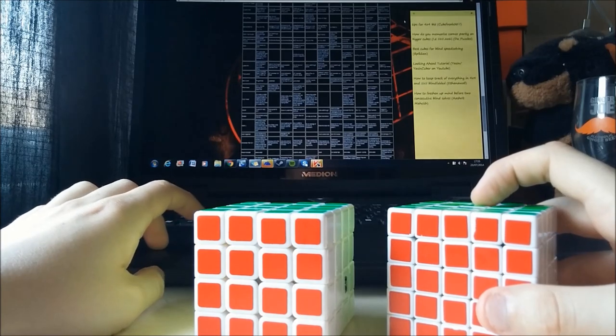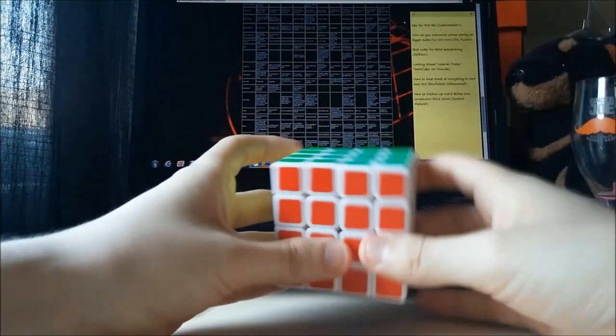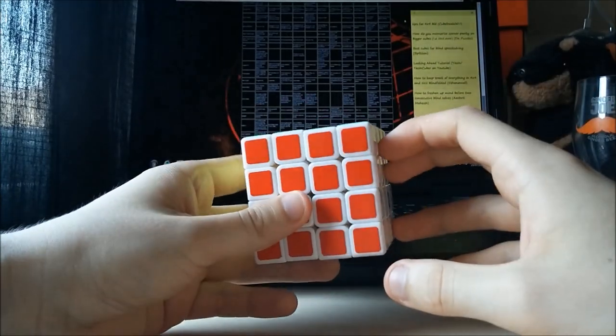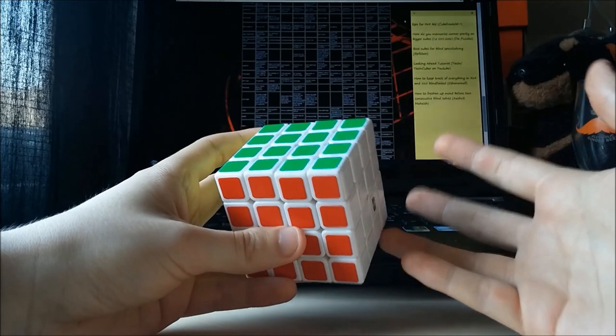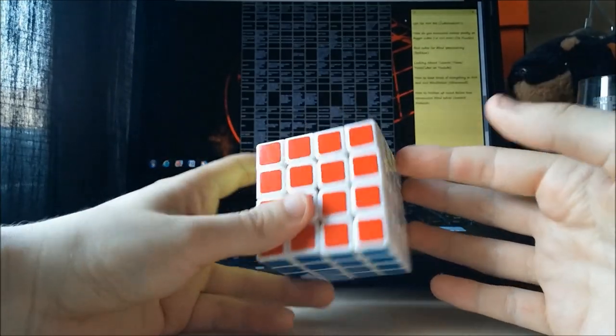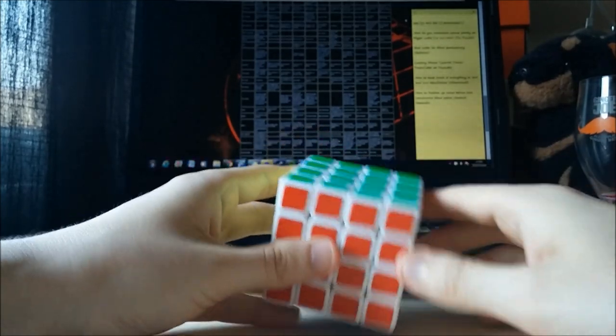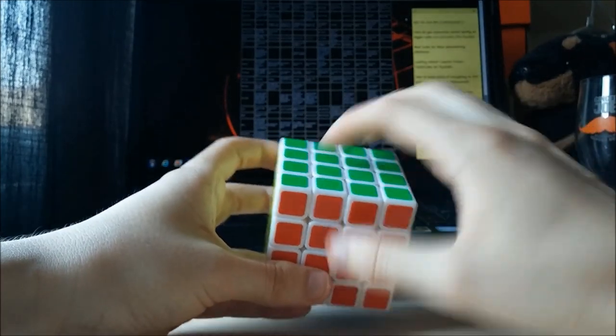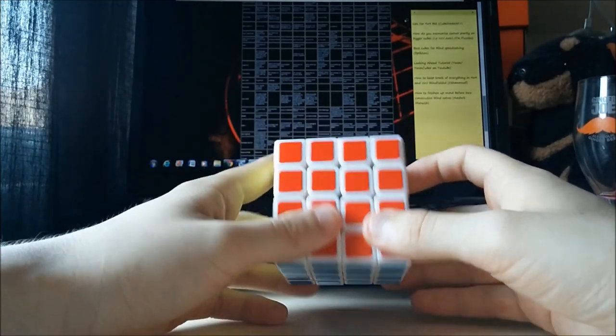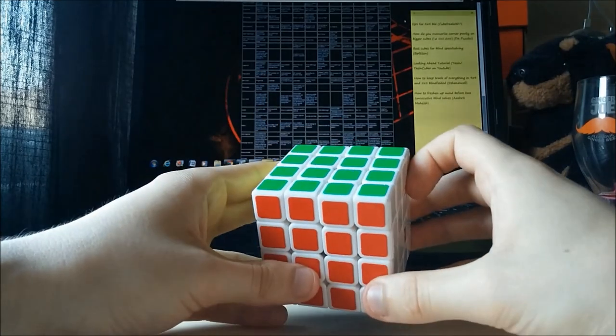So number one, by cubefreak007, tips for four blind. We'll see if we can get this in a minute. So four blind, when you boil it down, is just like a two or three cube multi. It's not much information to remember, it's just like a mental obstacle. It's 52 pieces and because you can orient centers at the very start to solve as many as you can, that takes it down to about 44, 45, 46, which really means it's a two cube multi.